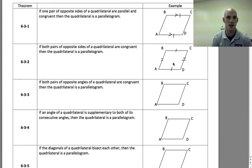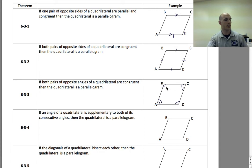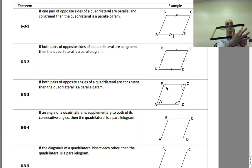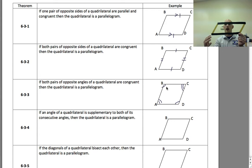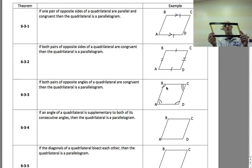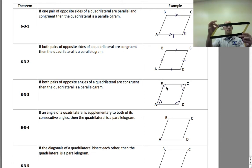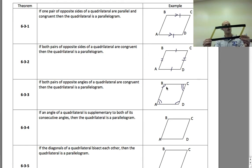Theorem 6.3.3: If both pairs of opposite angles of a quadrilateral are congruent, then the quadrilateral is a parallelogram. These theorems are all related to the ones we looked at in the last section. If these two black lines are parallel, this would be a transversal, and the two angles would be the same. If the angles are really small on one side and I move them over, they get really big — they move together and are always going to be the same opposite angles.